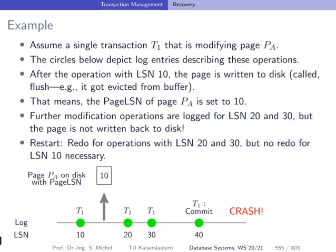So here's an example. Assume we have a transaction T1, which is modifying a page PA. Here we have in green circles marked the individual log entries and here we have the log sequence numbers accordingly. Now here you see depicted by this arrow that we have written this page to disk. So it got replaced from the buffer. So we have written it to disk. So we have this page on disk and we see here we have together with this page also the page LSN, which is 10 because this was the last operation that changed this page. Now for the forthcoming operations we have here the log entries, but the page was not again written to disk. And then the crash happens.